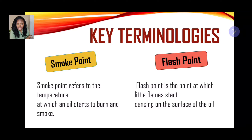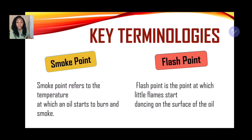The flash point is the point at which little flames start dancing on the surface of the oil. When we speak of the effects of heat on fats and oils, the smoke point occurs when the oil is heated to a particular temperature and produces blue fumes, while the flash point is when the oil actually ignites.